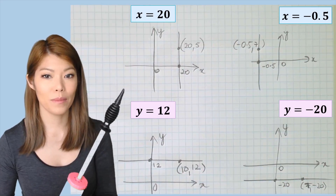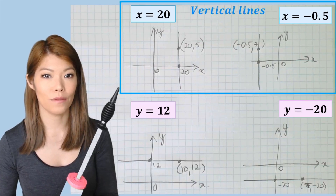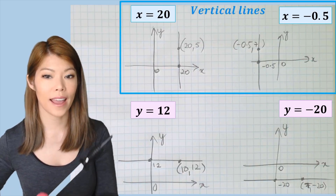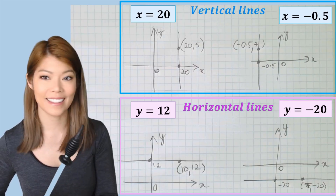So we described the top two as vertical lines, and the bottom ones as horizontal lines.